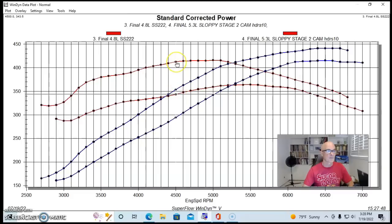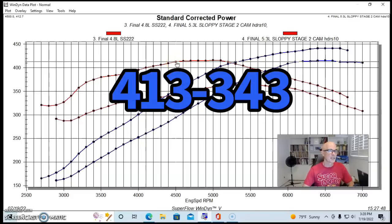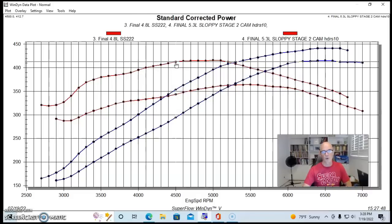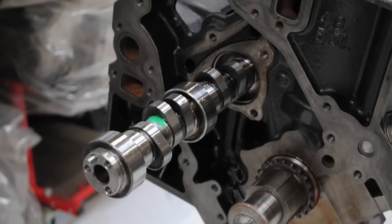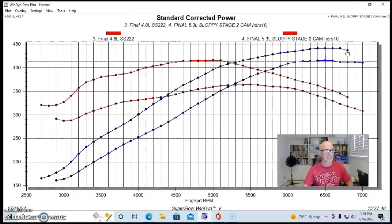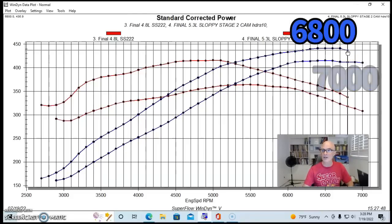Most of the gains, or the biggest gains I should say, certainly for torque, come below 5500 RPM. You can see we've got as much as 344 versus 413 foot-pounds. You're going to see a lot more torque, especially with these bigger cams.